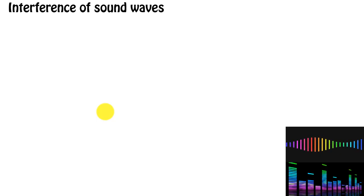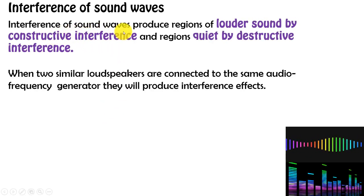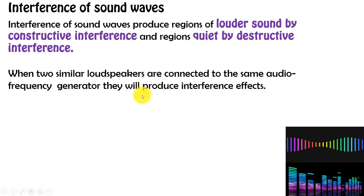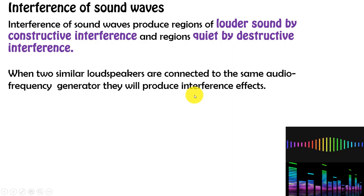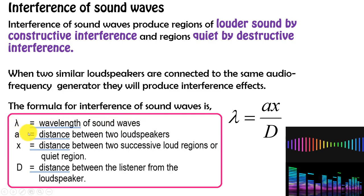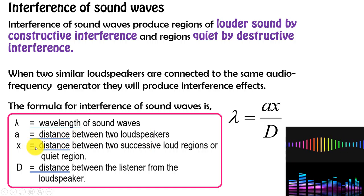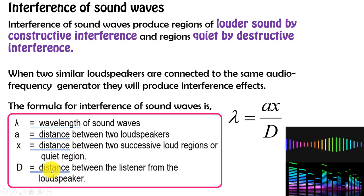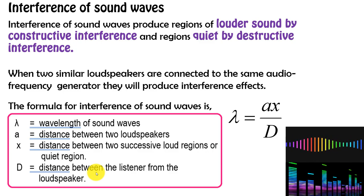For sound wave interference: two similar loudspeakers connected to the same audio frequency generator produce regions of louder sound (constructive interference) and quieter sound (destructive interference). The formula is still λ = aX/D, where 'a' is the distance between two loudspeakers, X is the distance between two consecutive louder (or quieter) regions, and D is the distance between the listener and the loudspeakers.